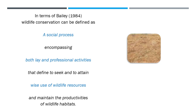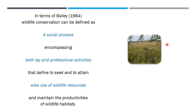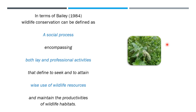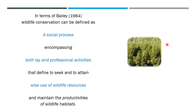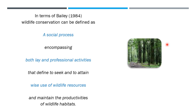For example, if we start with bare land, the first to come may be grasses, which are replaced by herbs or perennial plants, then by shrubs, and ultimately by trees. This is a simple illustration of the succession process.